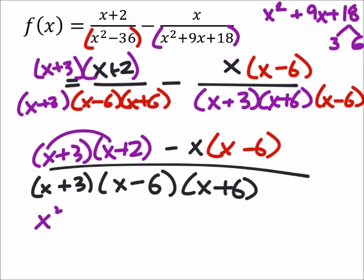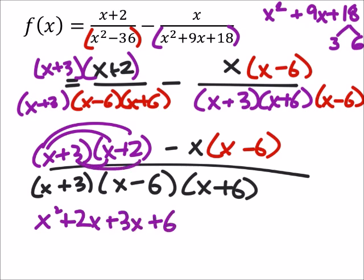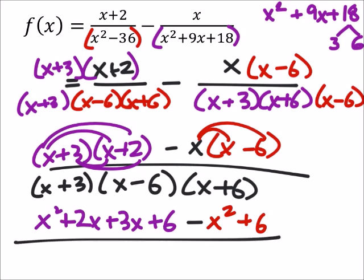I've got x squared plus 2x. Then I've got plus 3x and plus 6 minus that would be x squared, and that would be minus 6x, all over our denominator.